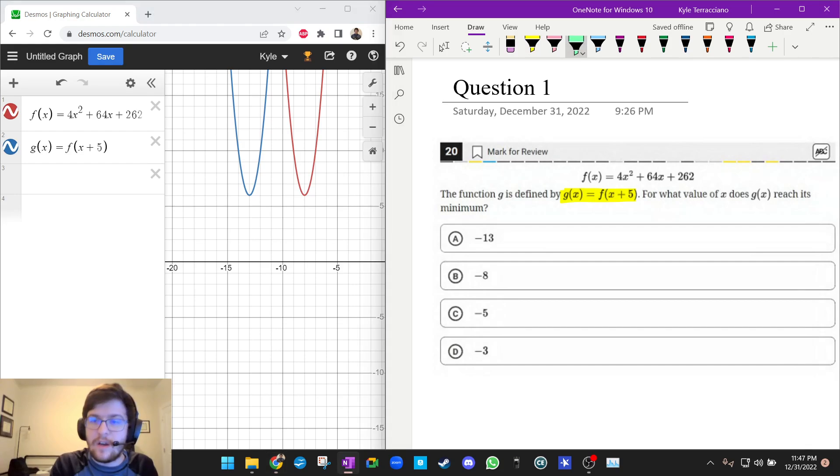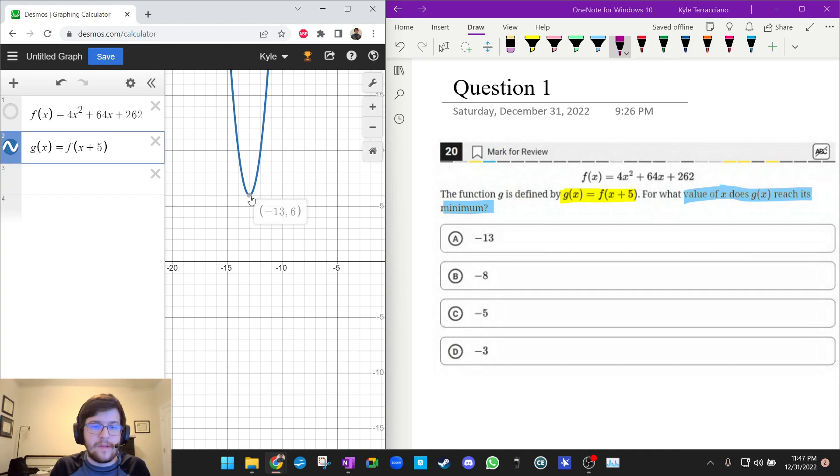Okay, so the question says, for what value of x does g(x) reach its minimum? So I actually went over this in one of the previous Desmos videos. We only care about g(x), so let's unhighlight f(x). And we can highlight the vertex, the minimum. And it says, what value of x does it reach its minimum? And you can see it reaches that minimum at negative 13. So you didn't even need to do anything with the function translation. You didn't need to figure out that it was moving 5 left. You could have just completely done this one using Desmos. Very helpful.